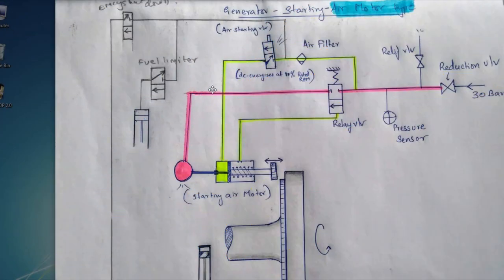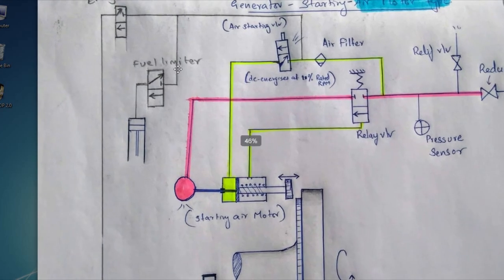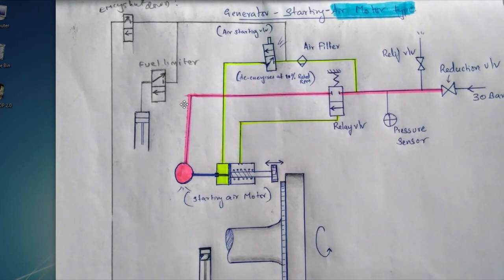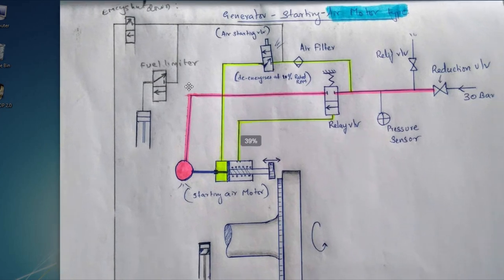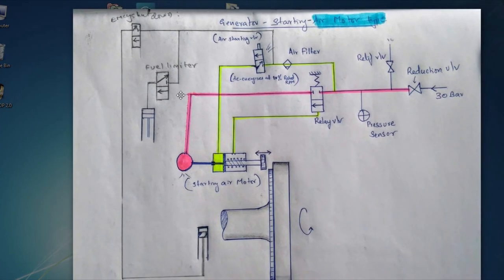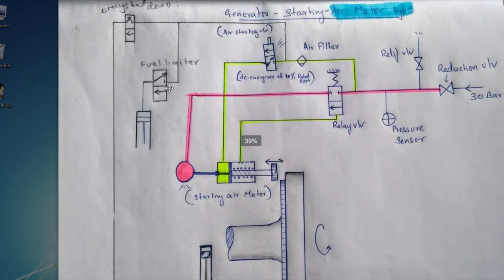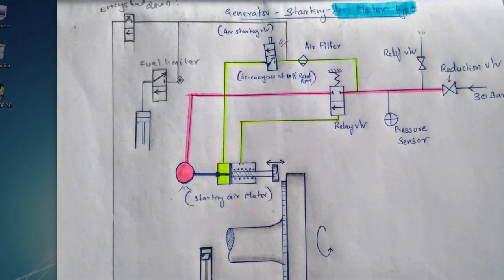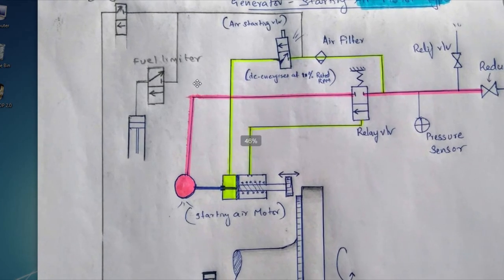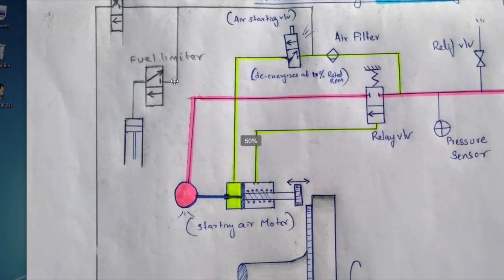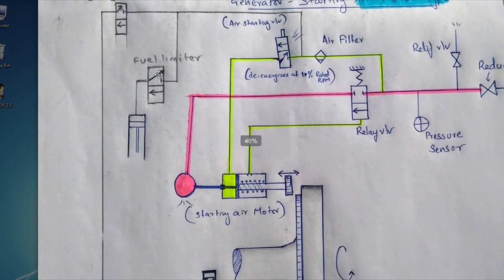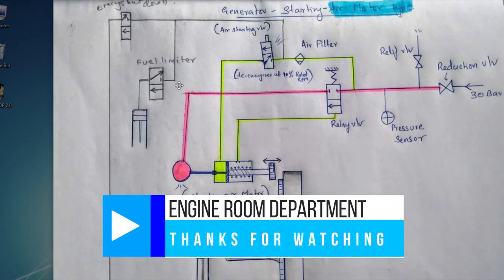I need to mention one more thing in this, is that this is the fuel limiter. At the time of starting, we should not allow the fuel rack to go 100% in. It will cause black smoke at the time of starting. So with this fuel limiter, what it does is it only allows 30 to 35% of the fuel rack to go in. Thus reducing the black smoke.